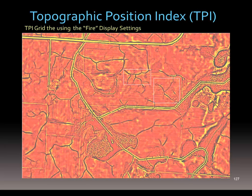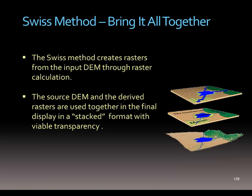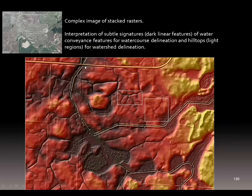We've been talking about displaying data with various settings and transparency. There is a Swiss method where we're taking those layers and using raster calculation to create a layer that combines and brings all that together. The important thing is that we're using this information — whether we actually combine it or just display it — so that we're clearly able to interpret where the linear features are, where the dark linear features indicating water conveyance are, or the hilltops that are light.